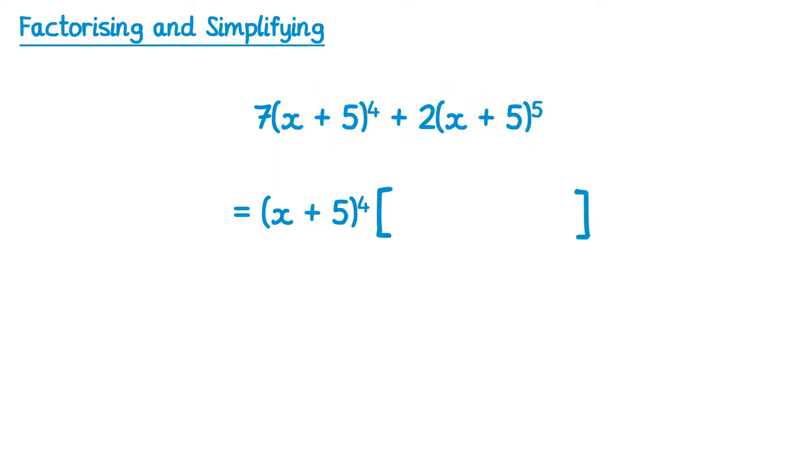Then we consider what would you multiply (x + 5)⁴ by to get 7 lots of (x + 5)⁴? Well that's just 7. Then what would we multiply (x + 5)⁴ by to get 2 lots of (x + 5)⁵? Obviously we need a 2, but we also need one more of the (x + 5)'s.